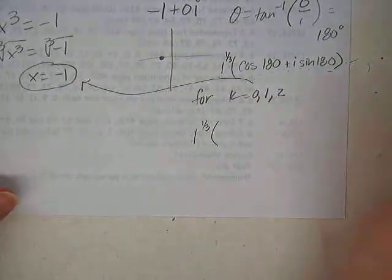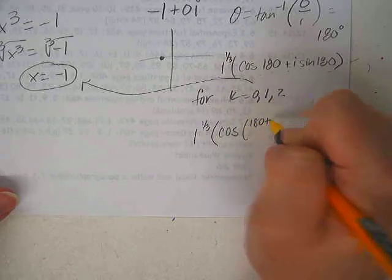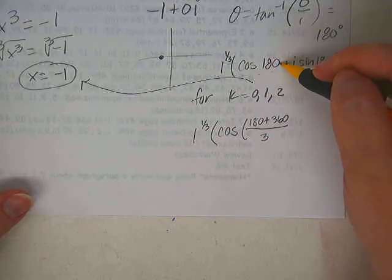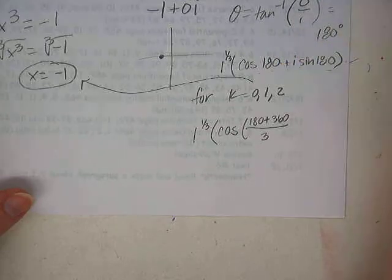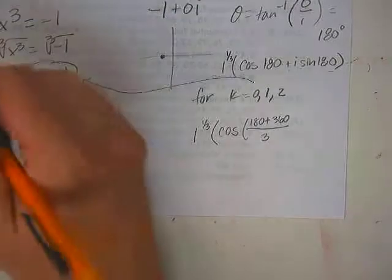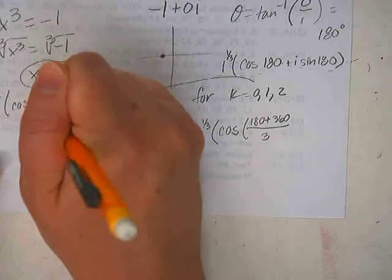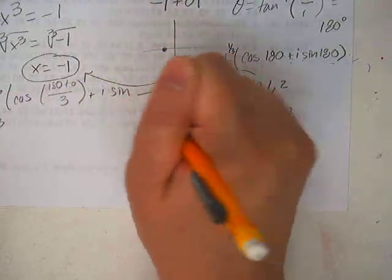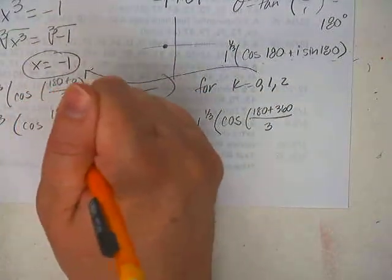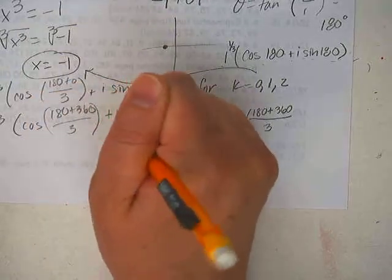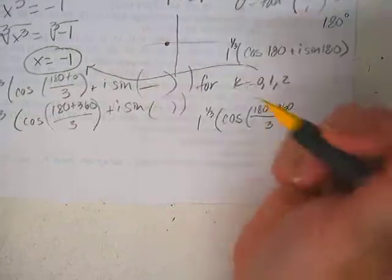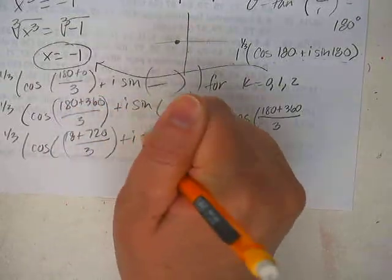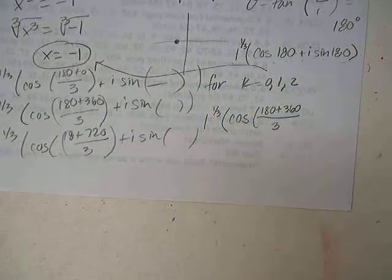So then we would go 1 to the 1 over 3 power, which is still 1, times cosine of 180 plus 360 divided by 3. So we have 1 to the 1 third power times the cosine of 180 plus 0 divided by 3. And then cosine of 180 plus 360 divided by 3 plus the sine stuff. And then 1 to the 1 third cosine of 180 plus 720 divided by 3 plus i sine of that same angle.